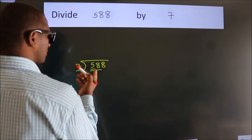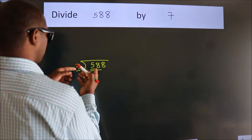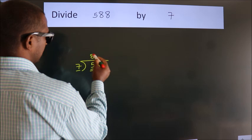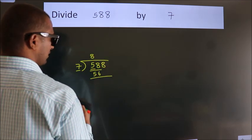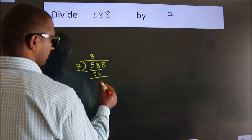A number close to 58 in the 7 table is 7 times 8, which equals 56. Now we should subtract. We get 2.